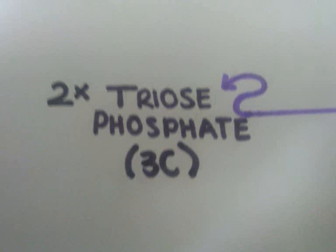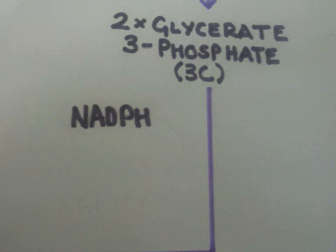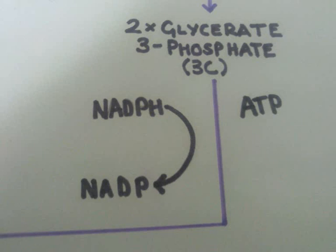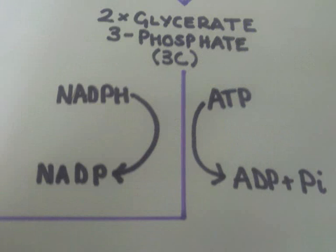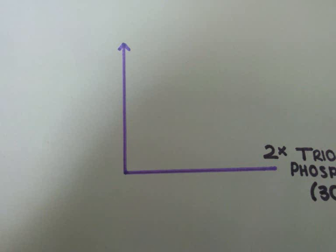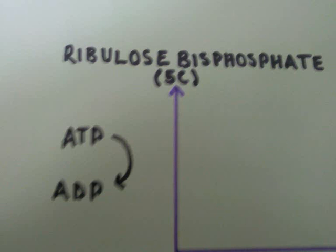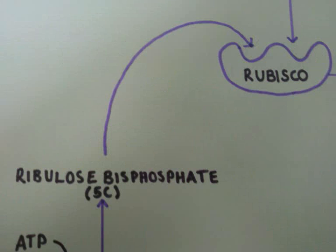Glycerate 3-phosphate is reduced and phosphorylated to another 3-carbon compound, triose phosphate. ATP and reduced NADP from the light-dependent reaction are used in this process. 5 out of every 6 molecules of triose phosphate are recycled by phosphorylation using ATP from the light-dependent reaction to regenerate 3 molecules of ribulose bisphosphate.